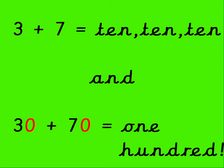3 add 7 is 10, 10, 10, and 30 add 70 is 100.